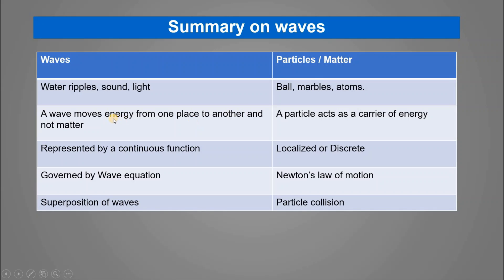How does a wave transfer energy? Through a medium or a field — for example, an electromagnetic field through which the wave is transferred. When waves travel, there is no net movement of matter. The matter — gas or liquid — simply serves as the medium.